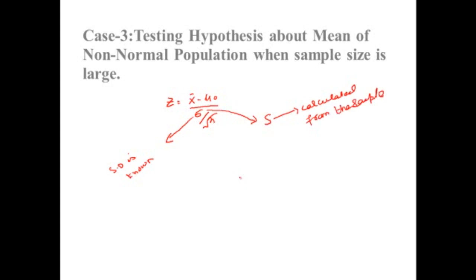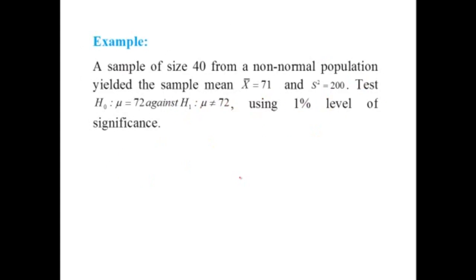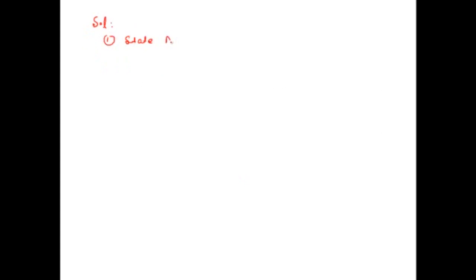The remaining procedure and steps are the same as we have been following before. A sample of size 40 from a non-normal population yielded a sample mean equal to 71 and variance equal to 200. Test H-naught in which mu equals 72, and its alternative hypothesis is mu not equal to 72, using the 1% level of significance. In the first step, we will state the null and alternative hypothesis.